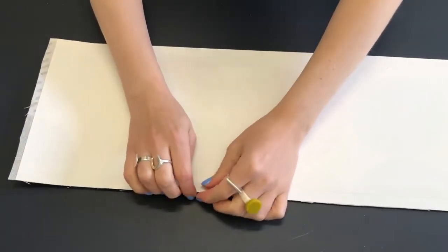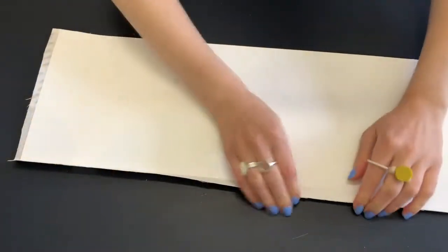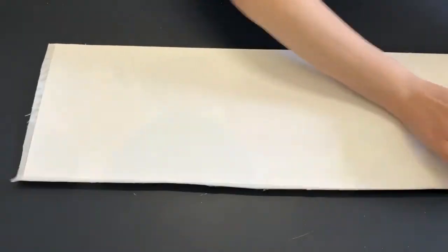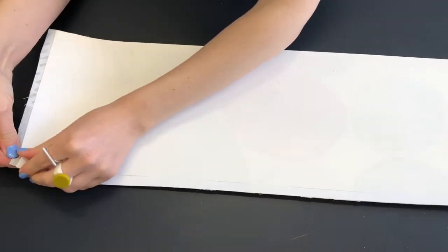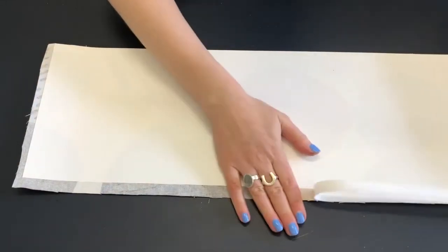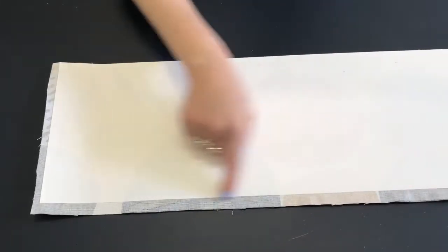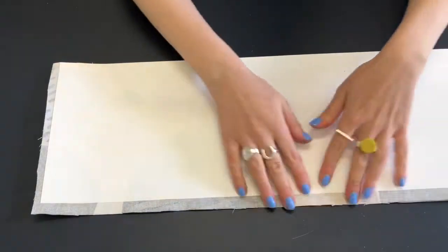And peel them off. Now try not to let your fabric fray too much as you do this. A lot of people worry at this stage that this isn't sticky. Where's the stickiness?